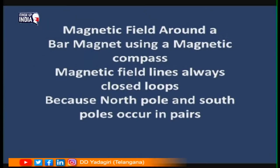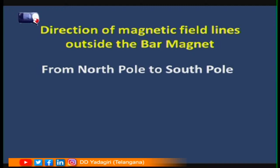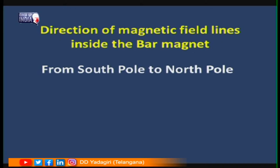We can draw the magnetic lines of force around the bar magnet using a compass and a bar magnet. We need to remember that the magnetic lines of force are closed loops — magnetic field lines always form closed loops. This is because north and south poles occur in pairs; we can never find an isolated pole. The direction of magnetic field lines outside the bar magnet is from north pole to south pole, whereas inside the bar magnet the magnetic field lines go from south pole to north pole.